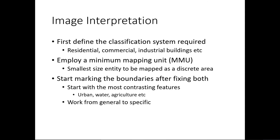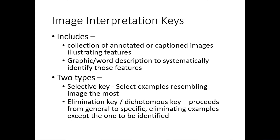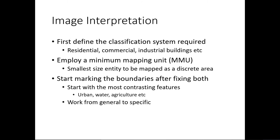Finally, after defining the classification system and employing the minimum mapping unit, you identify various features based on shape, size, pattern, tone, texture, shadows, site, association, and resolution — and you may also use image interpretation keys. Once you do that, you can interpret and classify a complete image into all the required classification categories. That is the basic procedure of visual image interpretation.